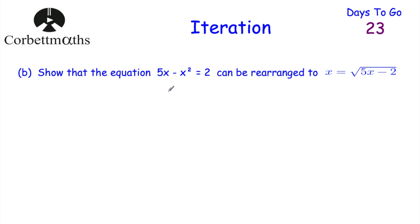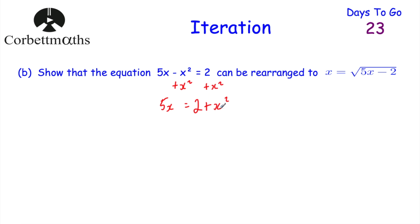Part B: show that 5x - x² = 2 can be rearranged to give x = √(5x - 2). To make x a subject: first add x² to both sides to get 5x = 2 + x². Then subtract 2 from both sides to get 5x - 2 = x². Finally, square root both sides to get x = √(5x - 2). And if you got that, well done.